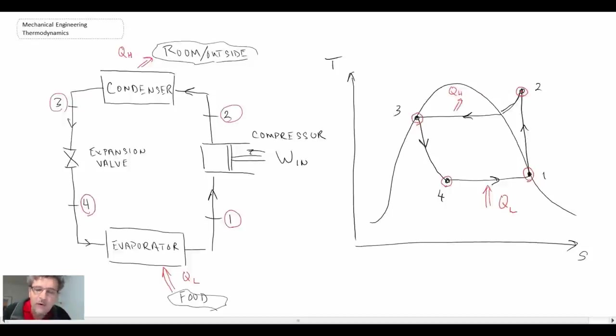At that point, we then go into whatever space we're trying to provide the cooling to. We absorb thermal energy from that space, be it your refrigerator in your house or the space that you want to have air conditioned. Through that evaporation process, we come back to state one and repeat the cycle again.